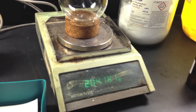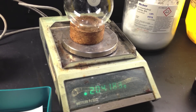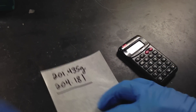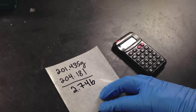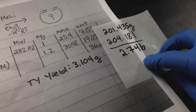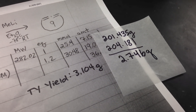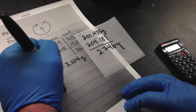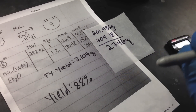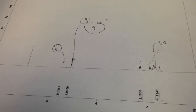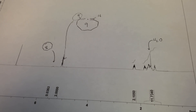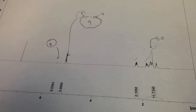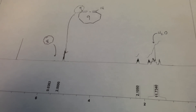Here's the little flask with our product. The mass reads 204.181 grams — we'll take the difference of those numbers to get 2.746 grams of product. Our theoretical yield was 3.104 grams, so to find our percent yield we divide what we actually got by what we expected to get. We got an 88 percent yield — that's pretty good. Now we just have to check for purity. Here is an NMR spectrum of the final product. Using the spectrum I can tell you with almost absolute certainty that the compound is there and it's very pure — greater than 97 percent purity.